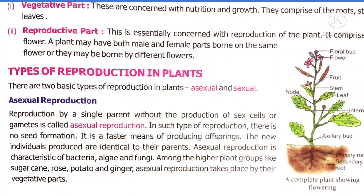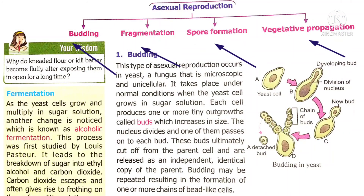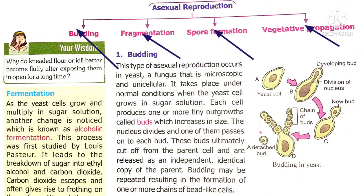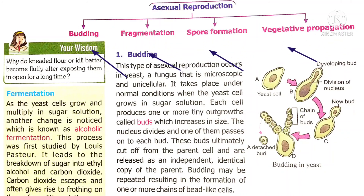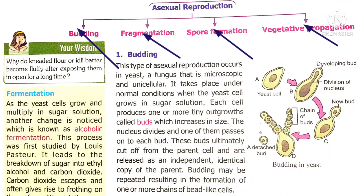There are several modes of asexual reproduction in plants: budding, fragmentation, spore formation, and vegetative propagation. Today in this section we discuss three modes of asexual reproduction — budding, fragmentation, and spore formation.